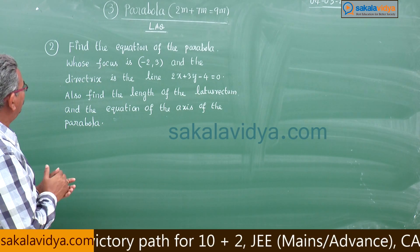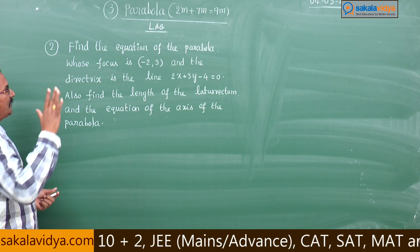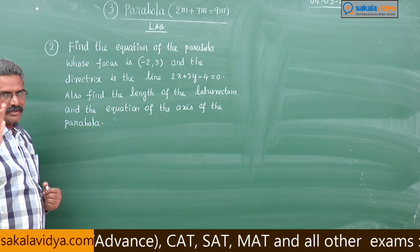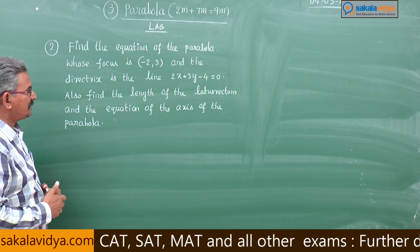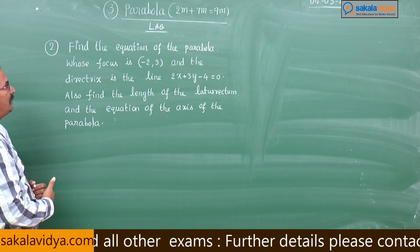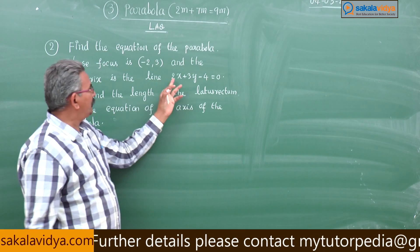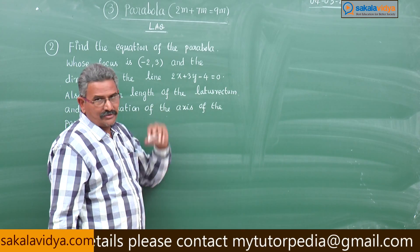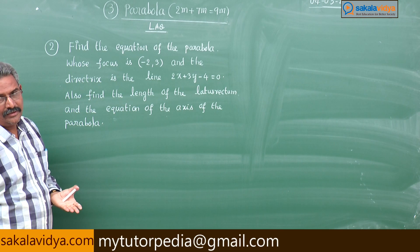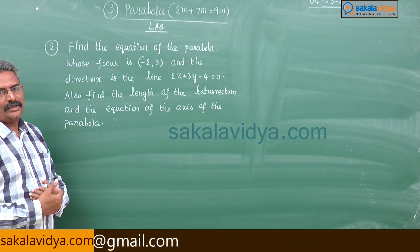So here we first have to find the equation of the parabola, after that the length of the latus rectum, which is equal to 4a. Next, the equation of the axis of the parabola — the axis is perpendicular to 2x + 3y - 4 = 0 and passes through the focus itself. That is very simple, we can find it out.